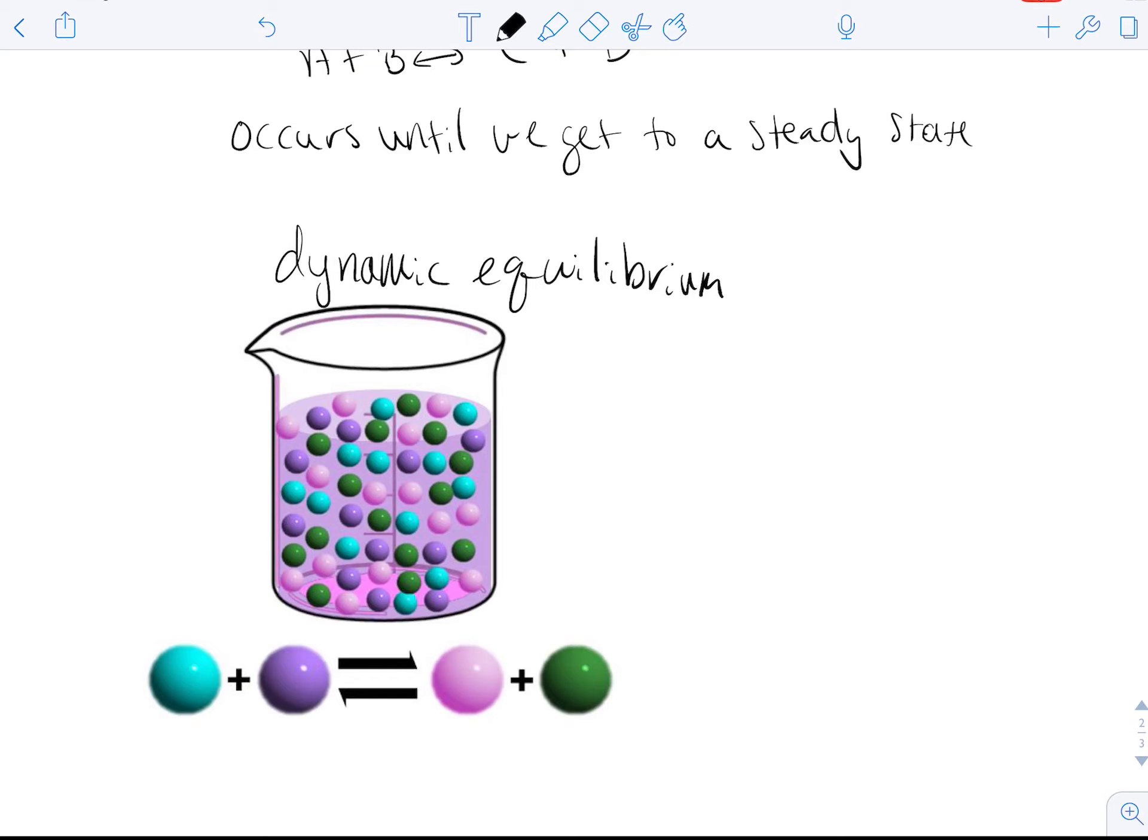So dynamic equilibrium is basically we have the reactions occurring, but they're occurring at the same rate so our concentrations of substances aren't changing. Again, our substances do not have to be the same concentration, but we're going to reach a set concentration of each substance. And our rate of the forward reaction, from reactants to products, will equal the rate of the reverse reaction.